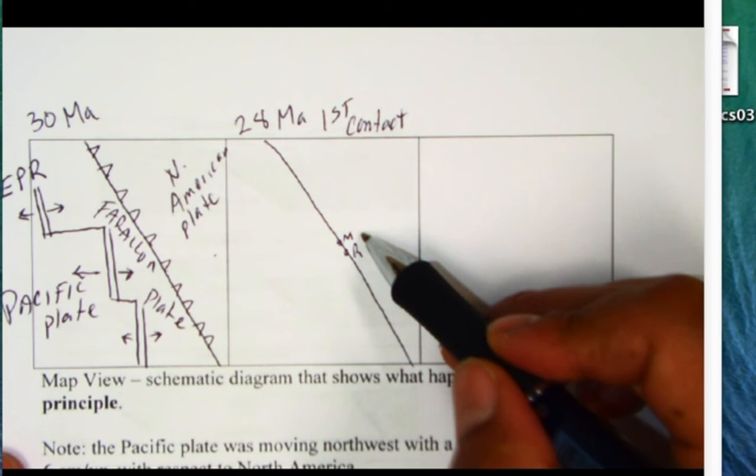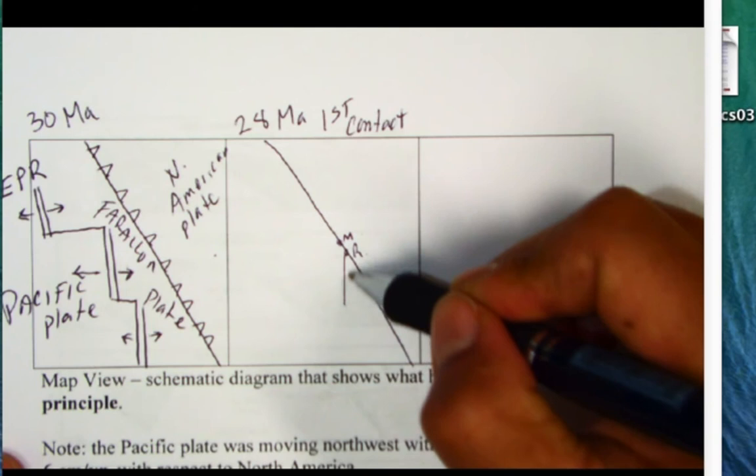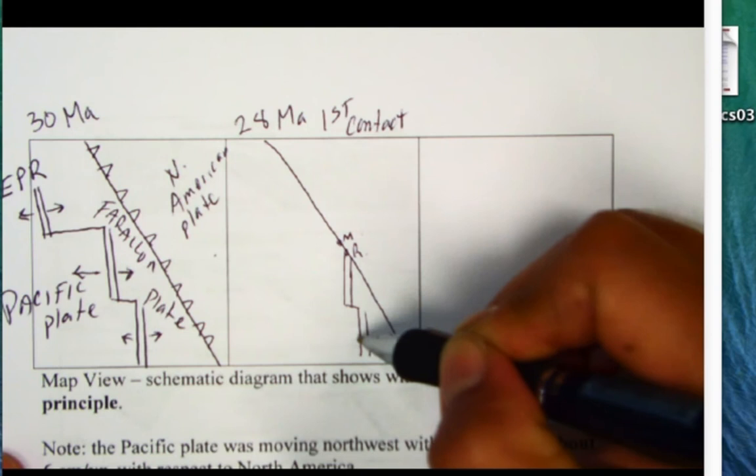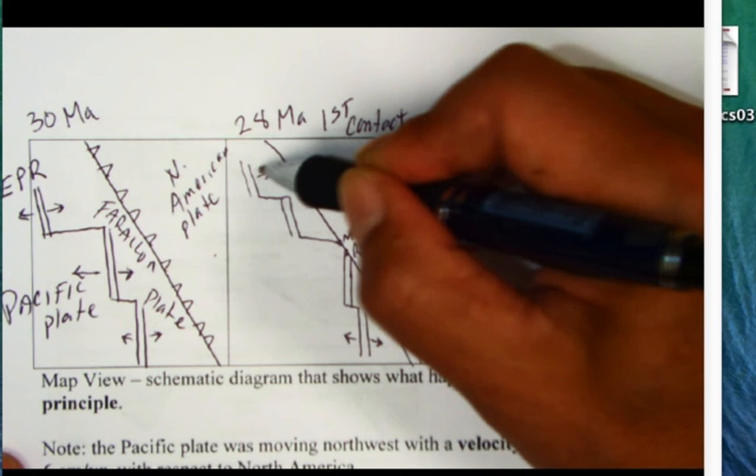They refer to the Mendocino and the Rivera junctions. To the south we still have that East Pacific Rise still spreading, so there's seafloor spreading. Then to the north we're going to have a transform fault here and then another mid-oceanic ridge going offshore. This ridge now is going to have a different name.